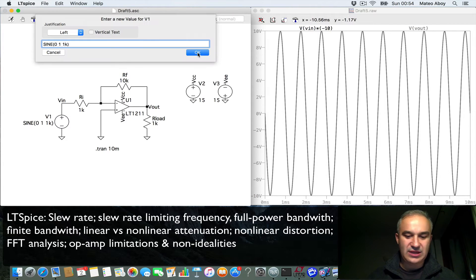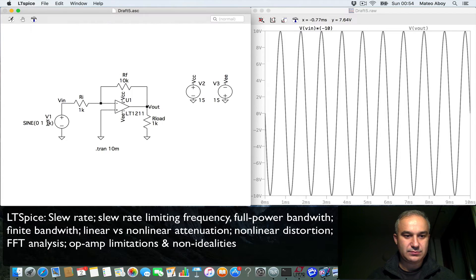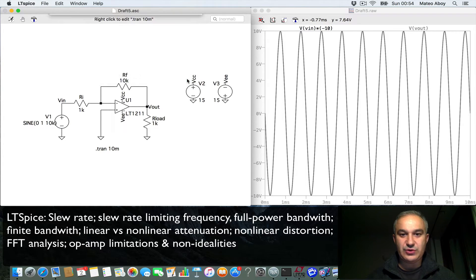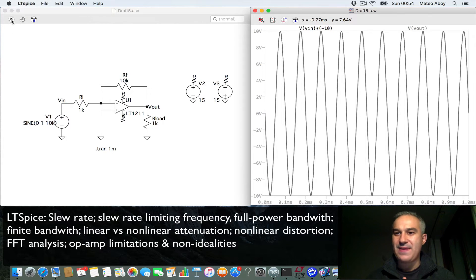We increase that, say, to 10 kHz. We have to decrease this by a factor of one so we have the same number of cycles. Perfect. In this case, a real operational amplifier still behaves ideally. And by the way, this is the job of a designer to choose an operational amplifier for a particular application, such that it behaves as an ideal amplifier within that range of operation.